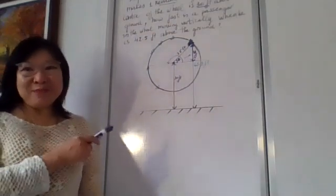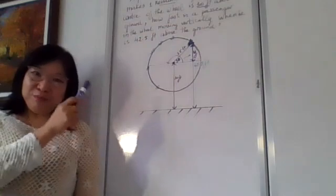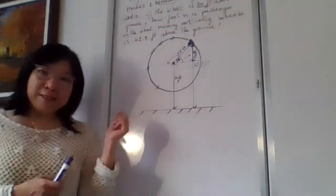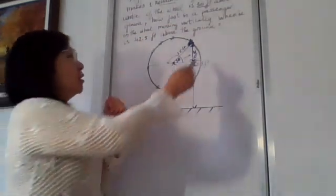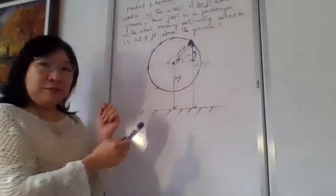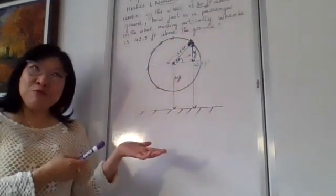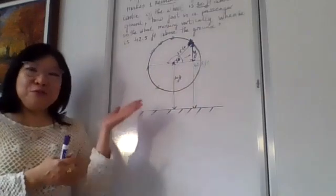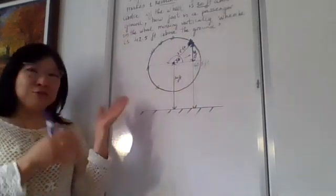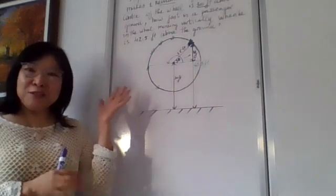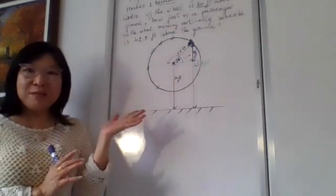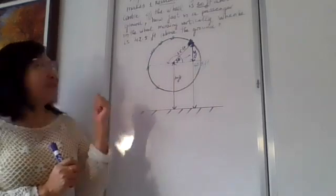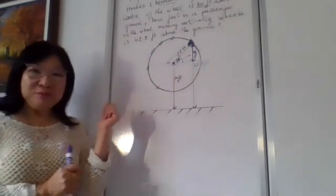So let me interpret the word problem with a diagram for you to get some idea. So we have a Ferris wheel — everybody knows Ferris wheels. When I was a child I was so thrilled; I wished I could go to the park and get into this Ferris wheel. But anyway, now we have to solve the problem.